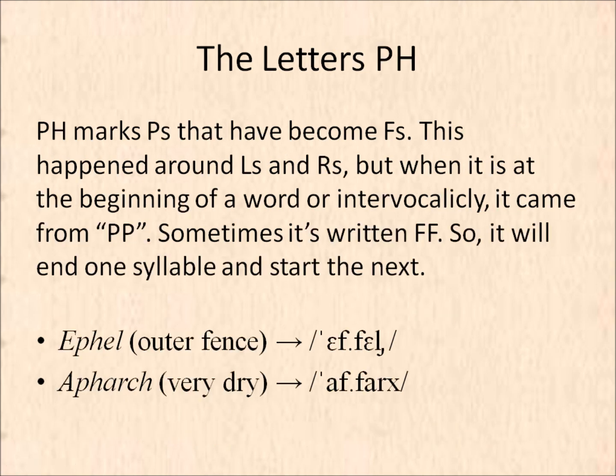The letters PH. As I mentioned before, PH marks consonants that have become S. You'll see this happening around L's and R's often, but when it is at the beginning of a word after a clitic, or if it's intervocalic — meaning between two vowels — it came from the consonant cluster PP. Tolkien sometimes wrote it FF. So it will end one syllable and start the next. Some examples would be Efel and Afer.